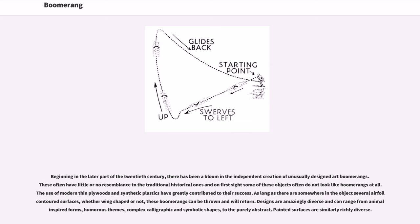Beginning in the later part of the 20th century, there has been a bloom in the independent creation of unusually designed art boomerangs. These often have little or no resemblance to traditional historical ones, and on first sight some of these objects often do not look like boomerangs at all. The use of modern thin plywoods and synthetic plastics have greatly contributed to their success. As long as there are somewhere in the object several airfoil-contoured surfaces, whether wing-shaped or not, these boomerangs can be thrown and will return. Designs are amazingly diverse and can range from animal-inspired forms, humorous themes, complex calligraphic and symbolic shapes, to the purely abstract.